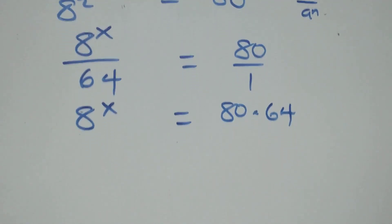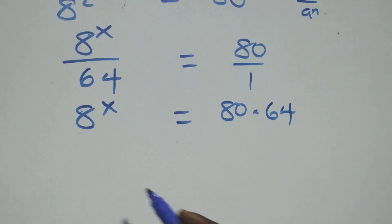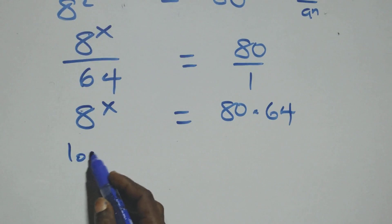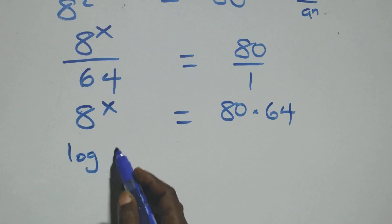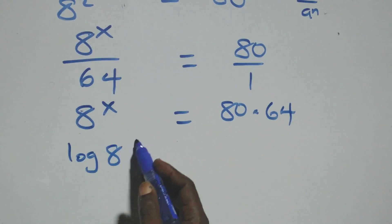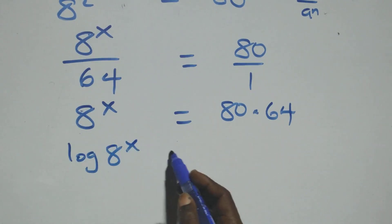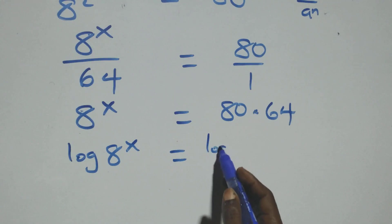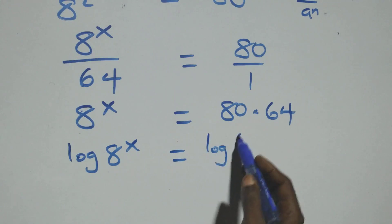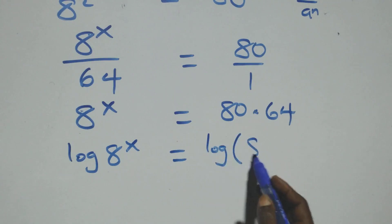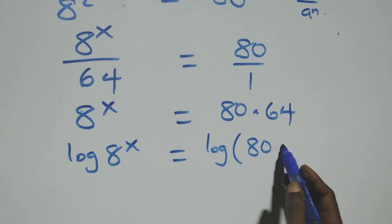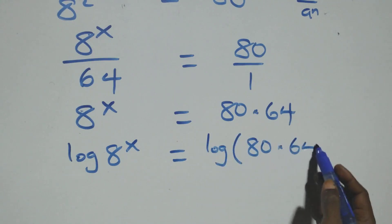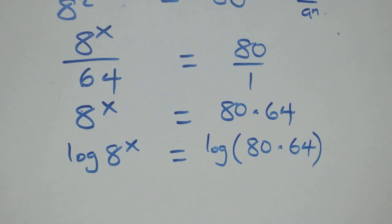OK, next step: we take the log on both sides. Here we have log of 8 raised to power x equals log of 80 times 64 on this side.